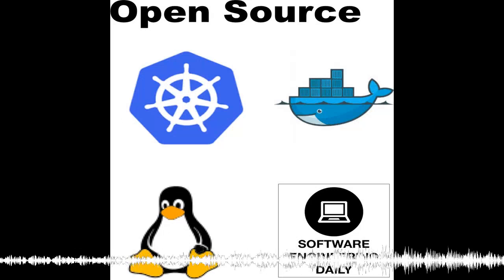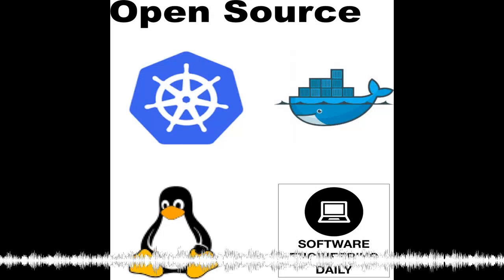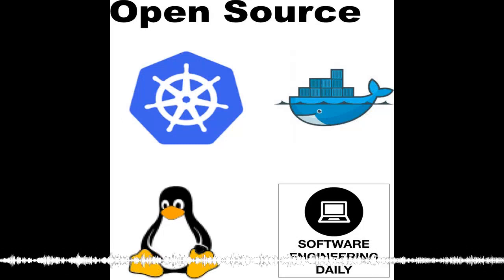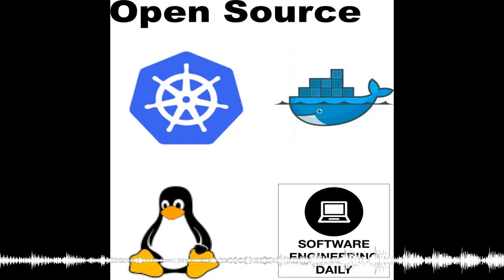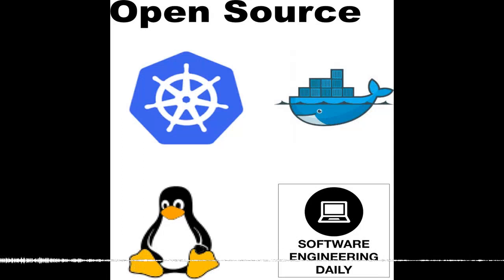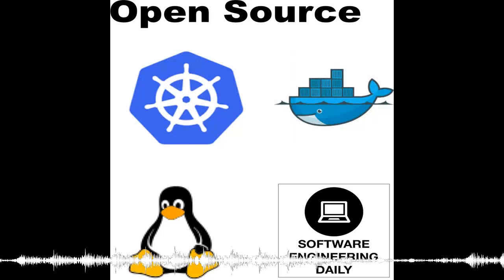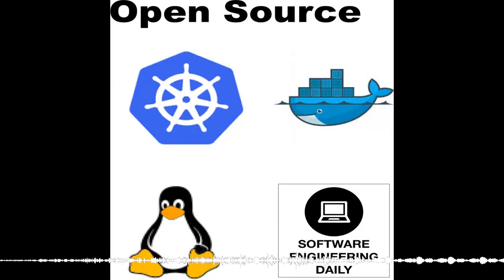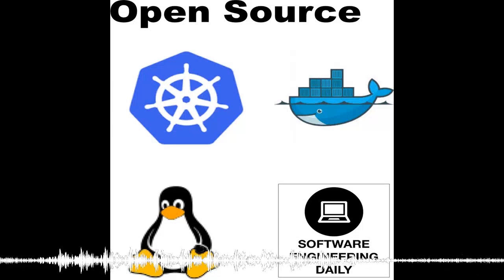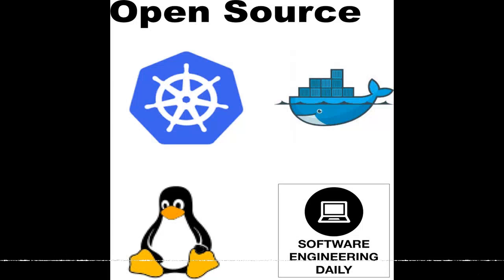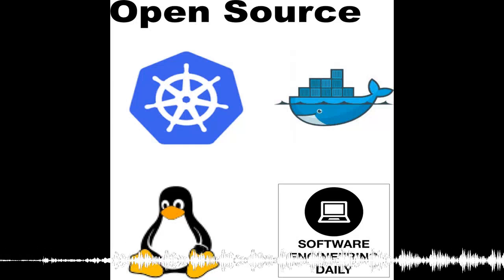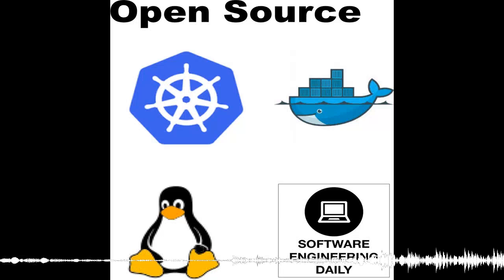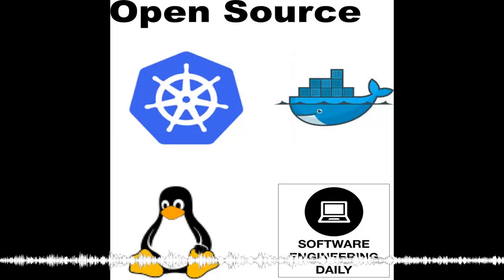A new user has to learn maybe half a dozen to a dozen concepts before they can start using Kubernetes. You have to know containers, images, how to create those images, how to host them in a registry, how to use image tags to manage versions — and that's just before you start with Kubernetes. Then you need to know what a deployment is, how Ingress works, and the concept of labels. These are extremely powerful concepts, but there's a significant learning curve, and that's one of Kubernetes' big challenges right now.